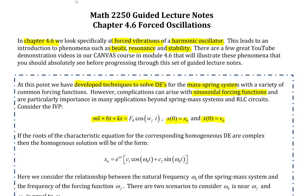If the roots of the characteristic equation for the corresponding homogeneous DE are complex, then the homogeneous solution will be of the form e^(αt) times [c₁ cos(ω_n t) + c₂ sin(ω₀ t)].